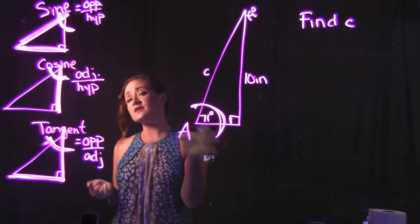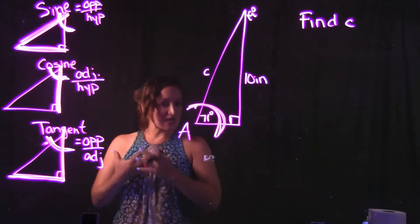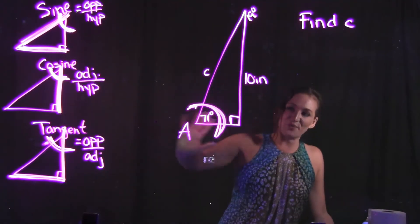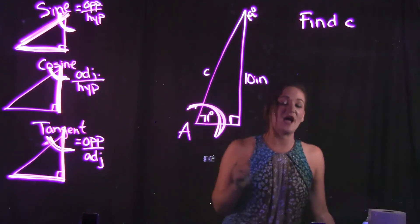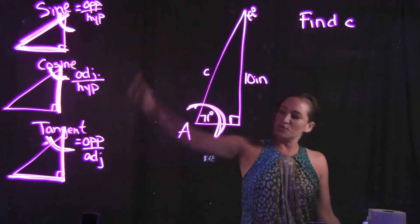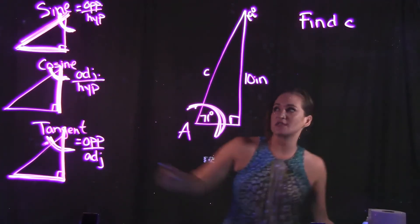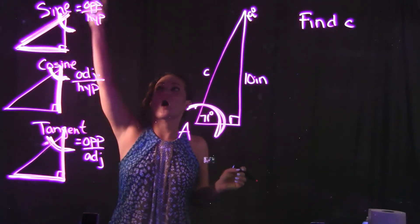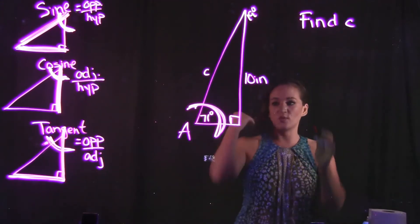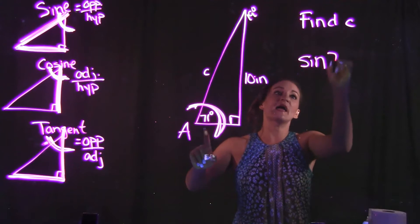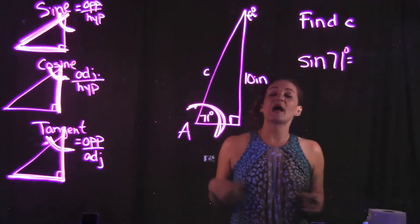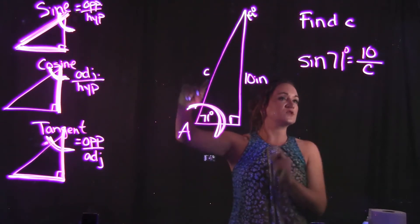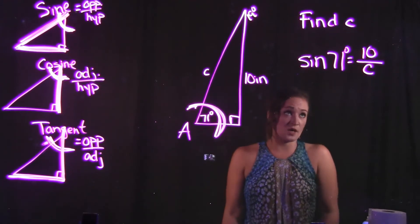Since they gave us 71 degrees as our angle, and in reference to that angle we know the opposite side and are trying to find the hypotenuse, we need the function that is opposite over hypotenuse — which is sine. So we set up: sine of 71 equals opposite over hypotenuse, which is 10 inches over C.